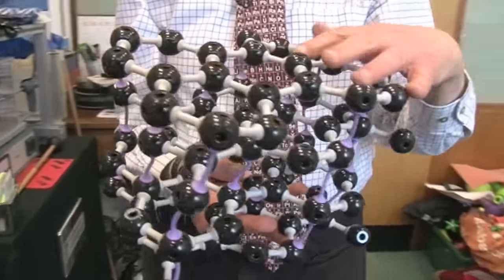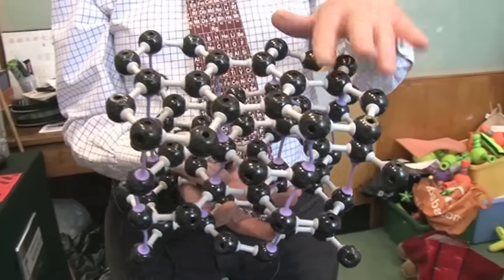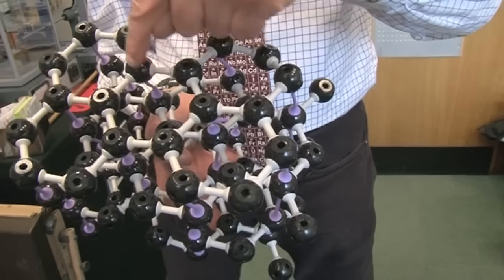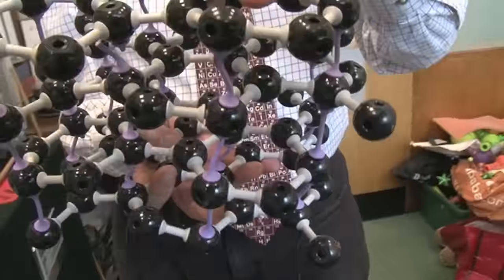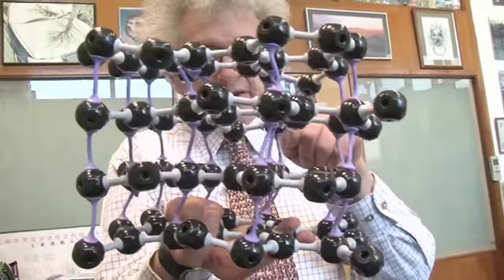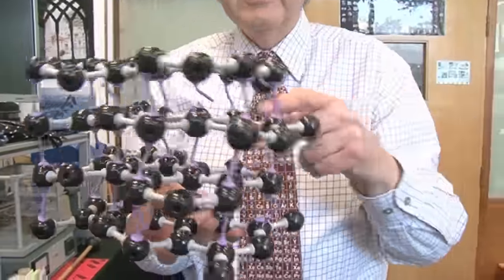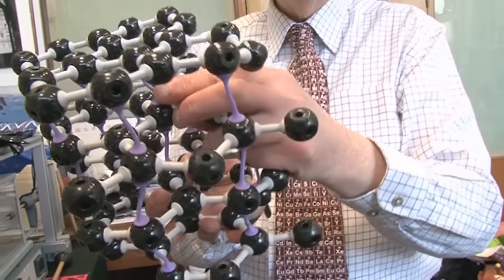First of all, this is a model of graphite, the material that's in the middle of pencils. And it consists of layers of rings, of hexagonal rings of carbon atoms. That's six carbon atoms. And they're joined together in layers. Can you see here? There are these purple bonds in between them. You can see they're not very strong. One's even broken here.